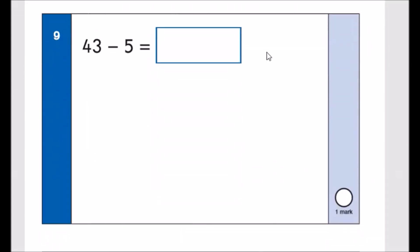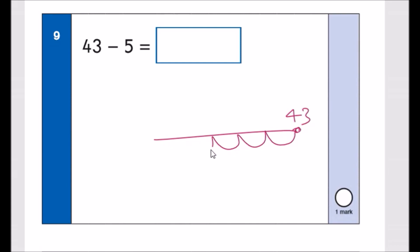Number nine: 43 take away 5. Start at 43 and count back 5: 42, 41, 40, 39, 38. The answer is 38.